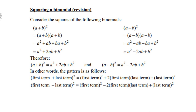Squaring a binomial: consider (a + b)². This means repeating (a + b)(a + b). Using FOIL and collecting like terms gives a² + 2ab + b². Similarly (a − b)² gives a² − 2ab + b². The shortcut: square the first term, square the last term, and the middle term is the first times the last times 2. This will save you tons of time.